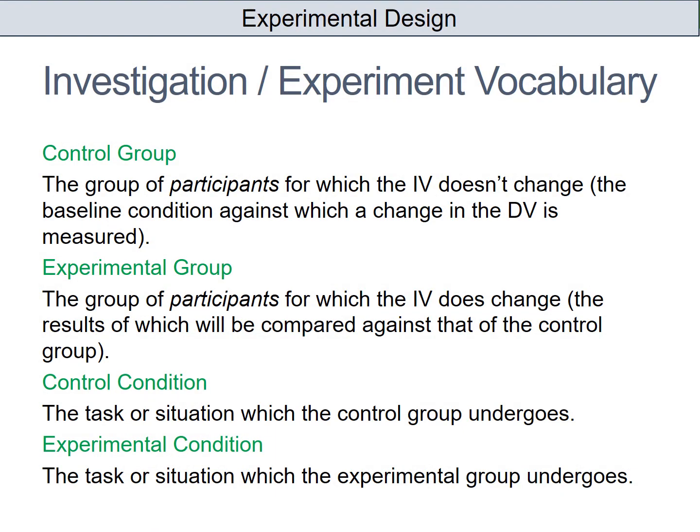Here are the key words that are very important in this video. The control group is a group of participants for which the IV doesn't change. The experimental group is the group of participants for which the IV does change. And the control and experimental conditions are the tasks or situations which those particular groups undergo.